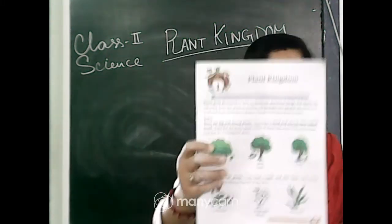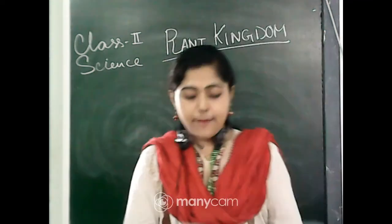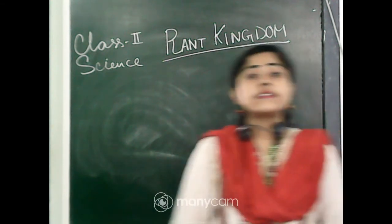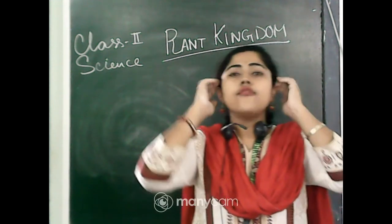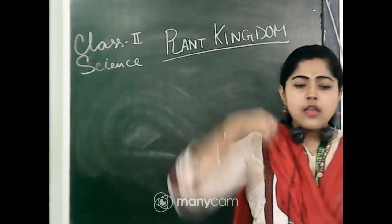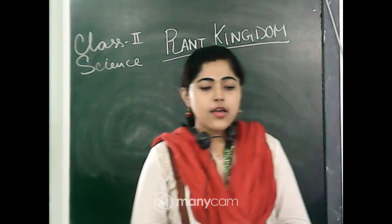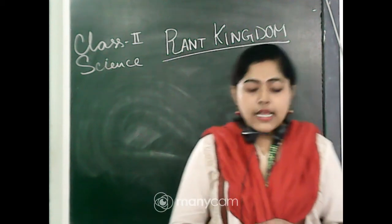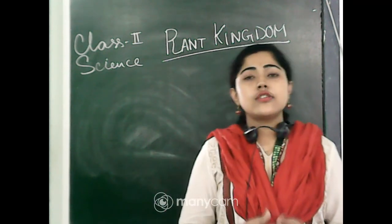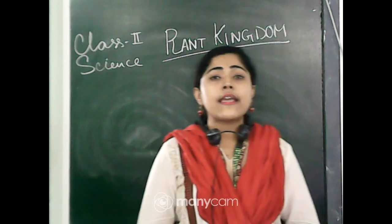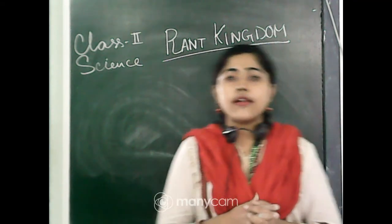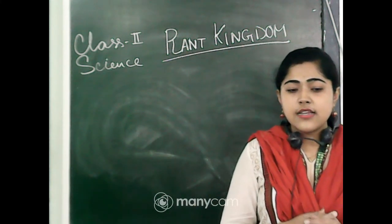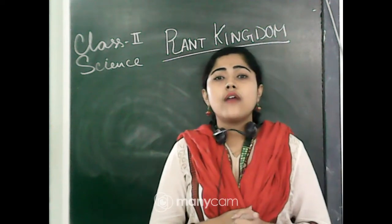Everyone please open the plant kingdom. Hope you can see plant kingdom, page number 5. We already started this chapter and we've already discussed the parts of plant, right? So today we have to discuss the kinds of plants. As I already told you, plants which we can see around us grow around us, and we can see various types of plants in the garden, in our neighborhood and around us.